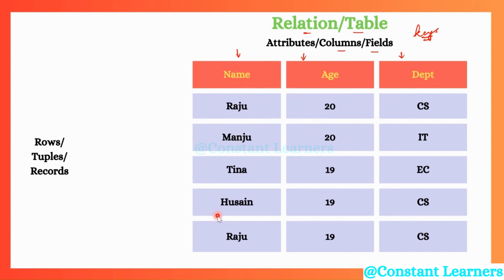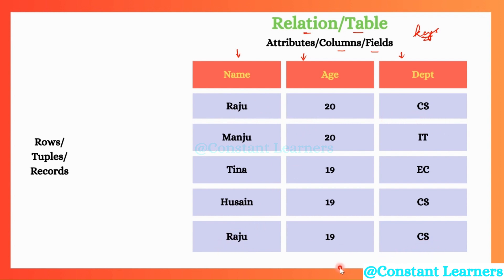I can access the columns with the column names. If I have to look at a person named Hussain, I can simply go to the name column. But what about the rows? Rows do not have any names. Let's say I want to fetch all the data about a student named Raju — but this student is Raju and this student is also Raju. There are two students named Raju, so which Raju am I looking for? The Raju in the CS department? But this Raju is also in the CS department and so is this Raju.